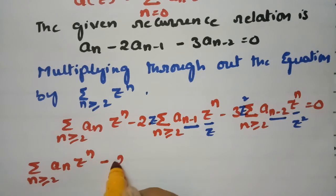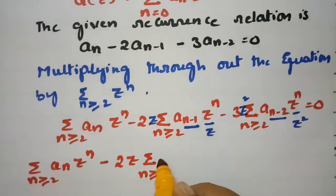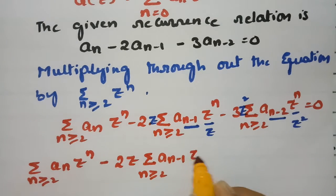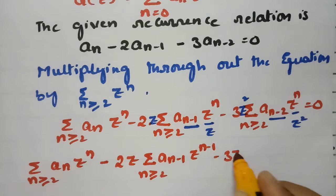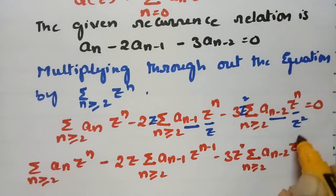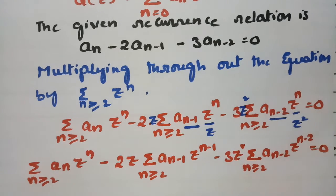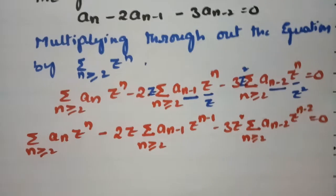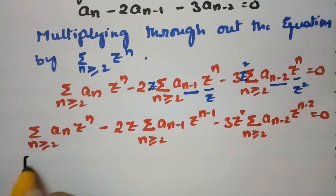After reindexing, this becomes: sigma(n≥2) aₙ·zⁿ minus 2z times sigma(n≥2) aₙ₋₁·z^(n-1) minus 3z² times sigma(n≥2) aₙ₋₂·z^(n-2) equals 0. Now we apply the generating function definition to each sum.